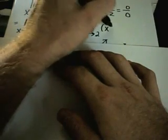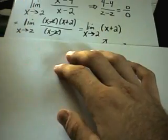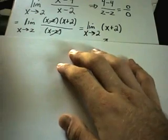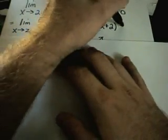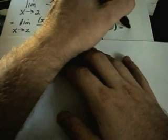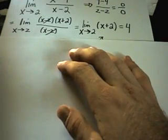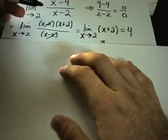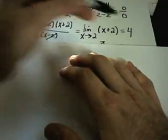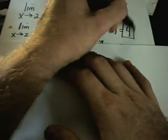Then you basically just repeat the plug and chug process. You try to plug the number back in again, and hopefully you'll get a solution. In this case, if I plug in x equals 2, I'm no longer dividing by 0. I'll get 2 plus 2, or 4. That's the answer to my limit. The limit as x approaches 2 of x squared minus 4 over x minus 2 equals 4.